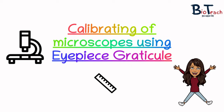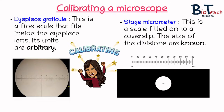Measuring and counting objects to be viewed under a microscope requires precisely marked measuring equipment. Two commonly used pieces of equipment are the graticule and the hemocytometer. This video is focusing on the graticule, which is used to measure the size of an object. A graticule is placed in the eyepiece of a microscope — sometimes these are called eyepiece micrometers or eyepiece graticules. It's usually about one millimeter long, divided into 100 equal units.